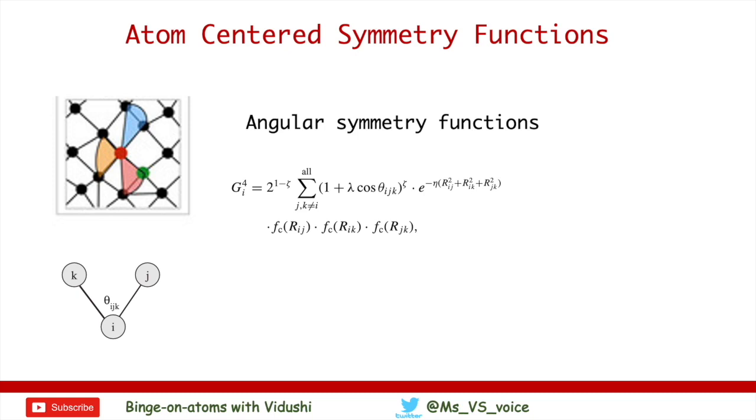In G4, you notice several new terms. Of course, Rij, Rik, and Rjk are distances between the three atoms. The new terms are theta_ijk, lambda, and psi. Let's discuss the significance of each of these three. As I have already mentioned, theta_ijk is the angle centered at atom I.